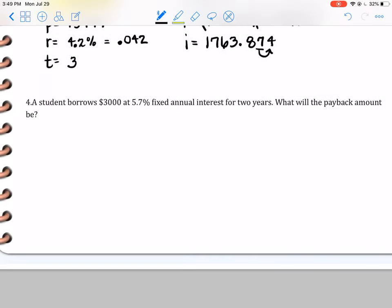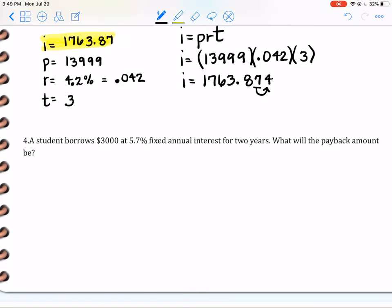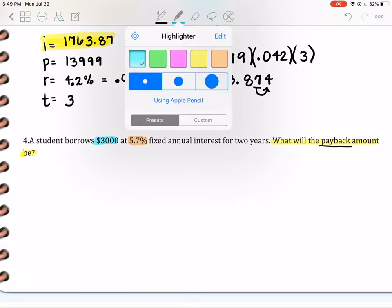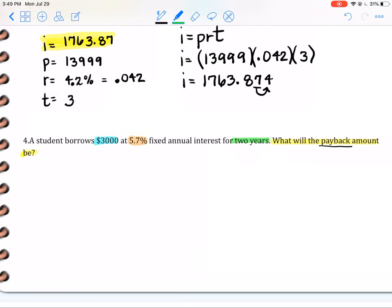Okay, number four. A student borrows $3,000 at 5.7% fixed annual interest for two years. What will the payback amount be? So the question is what will the payback amount be, and the bare bones of this is payback. Back up into your problem - there's the percentage rate, for some reason I'll always go for that first. There's the principal and I need the time, two years.